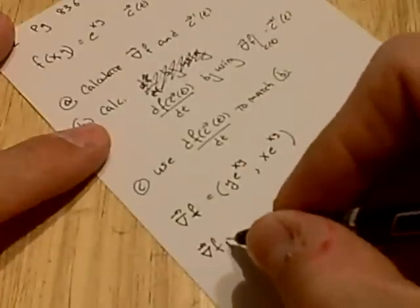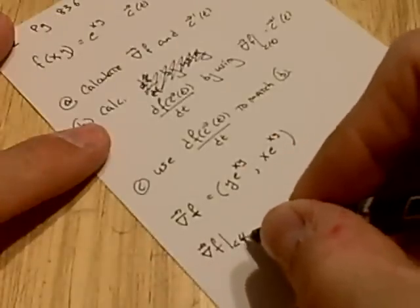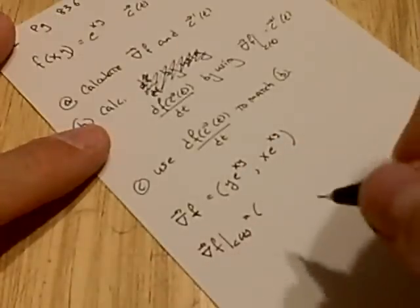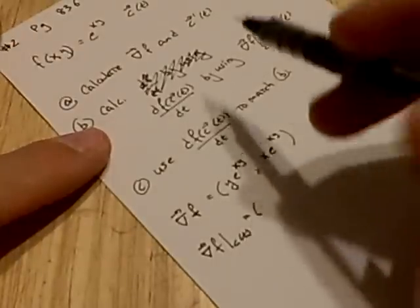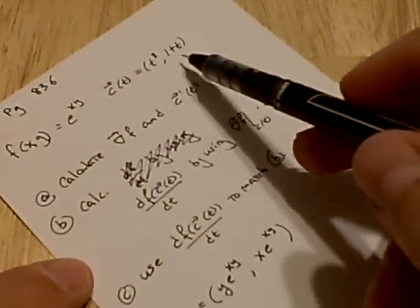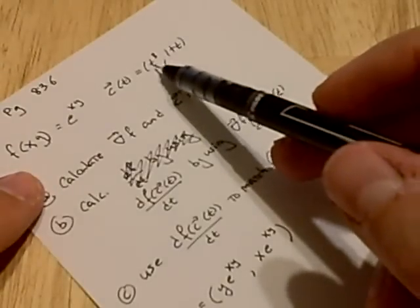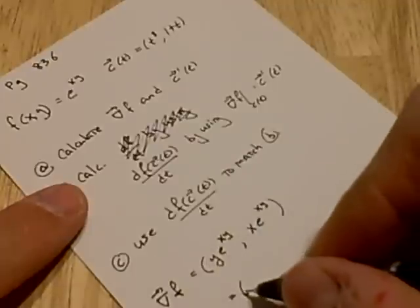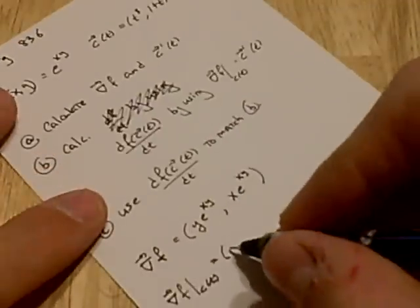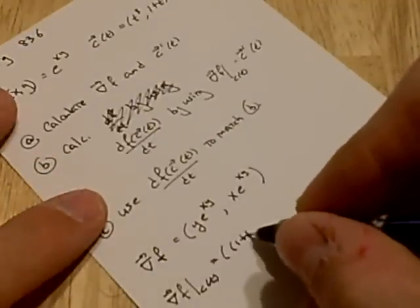The gradient evaluated on the curve, what we're going to do is replace the y's with the y function, the y component, and replace the x's with the x component. So down here, the y is 1 plus t,